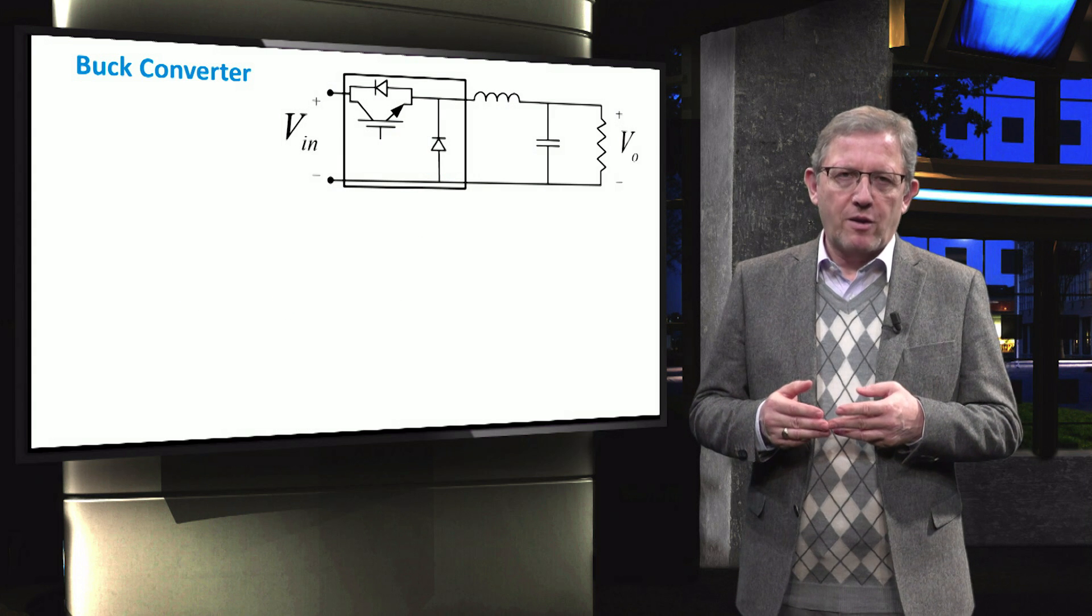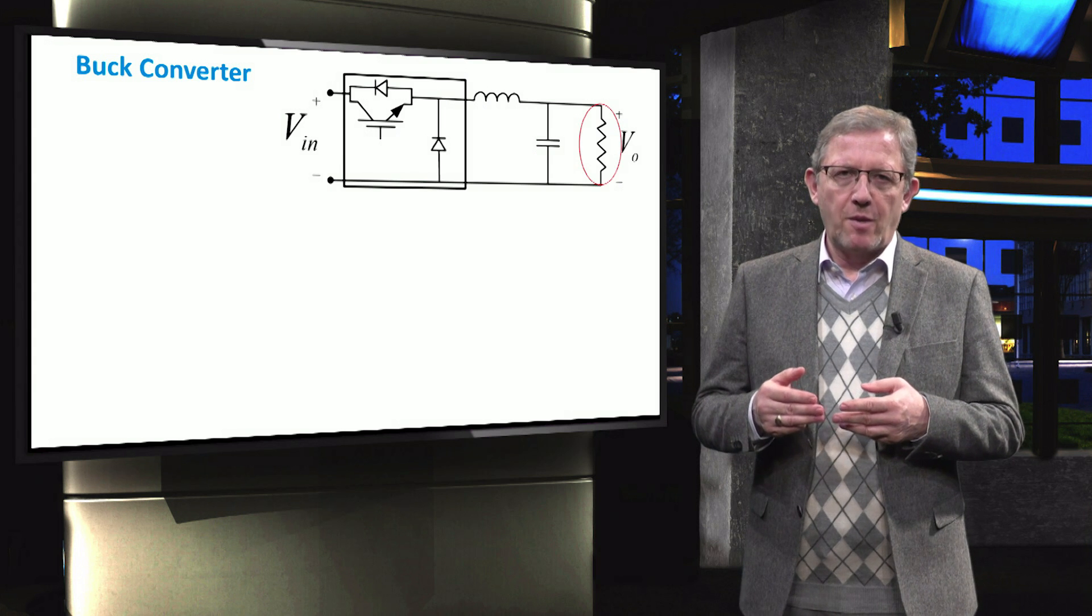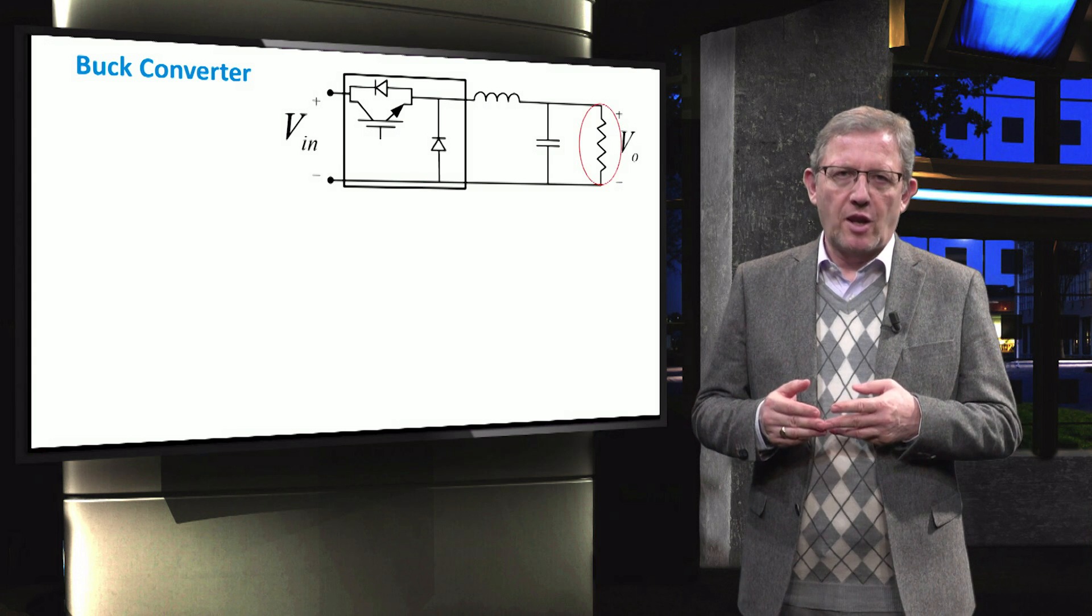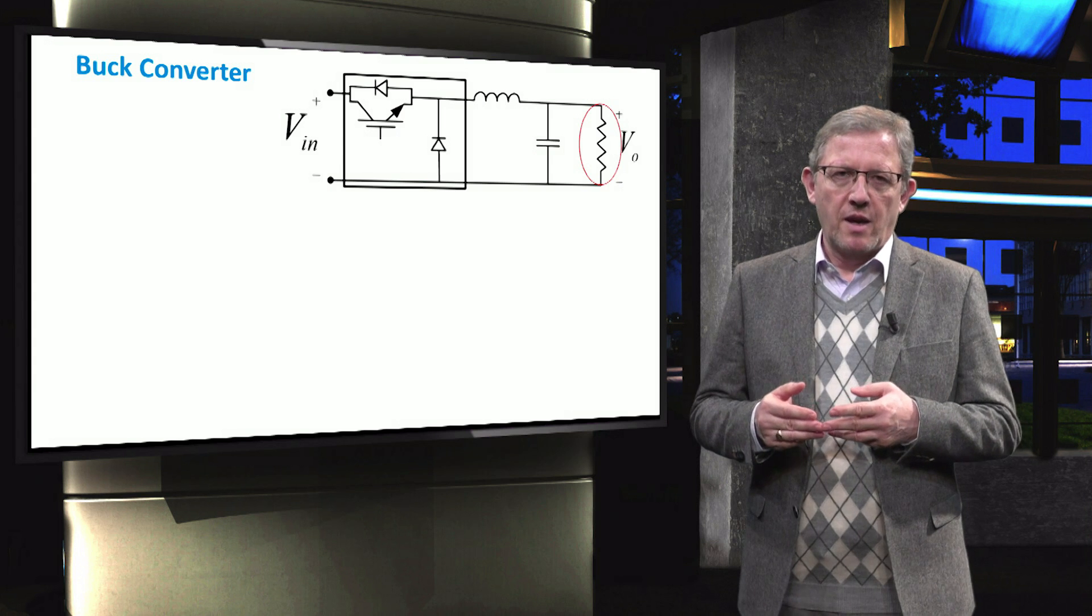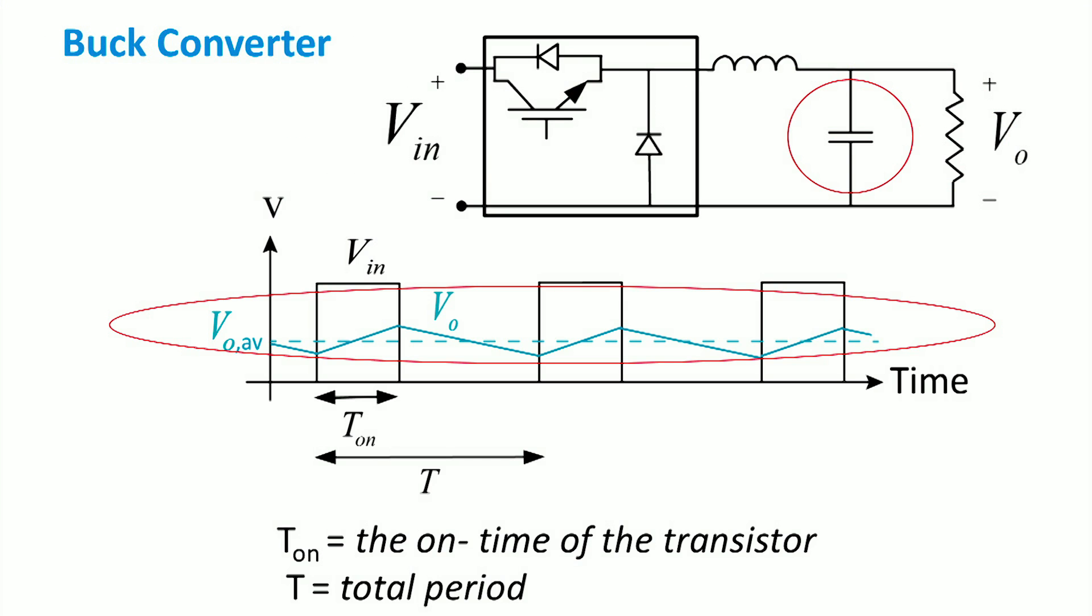The circuit diagram of the buck converter, step-down chopper, can be completed by adding a parallel resistor which represents the amount of the load consumption. If we add a capacitor in parallel with the resistor, we will help reduce the voltage ripple as it can be seen in the figure.